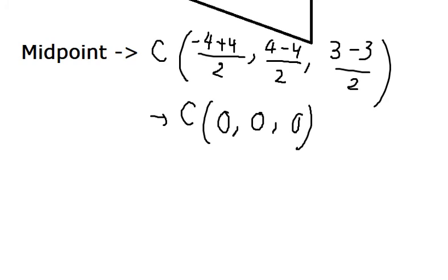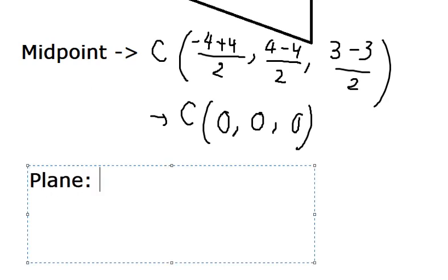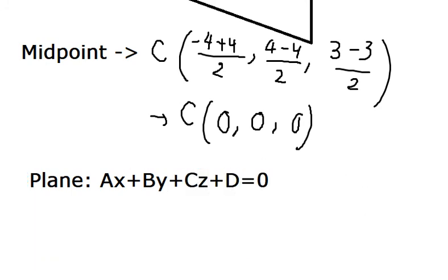We know that the formula of the plane. That should be about Ax plus By plus Cz plus D equals to 0. So if we put everything in here, D equals to 0.